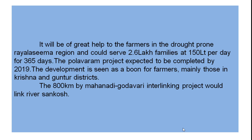The Pattisima project is expected to be completed by 2019. The development is seen as a boon for farmers, mainly those in Krishna and Guntur districts. The 800 km Mahanadi-Godavari interlinking project would link river Sankosh.